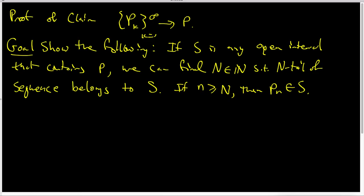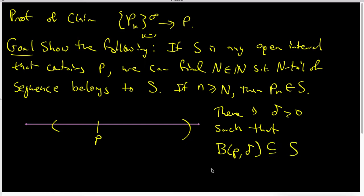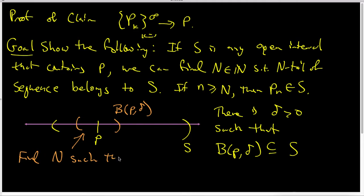We're going to do the standard kind of technique that we do in all of these problems. If this is my number line and here is p, and S is some kind of an open interval, the very first thing I want to say is there is a delta bigger than zero such that the delta ball centered at p is a subset of the open interval S. And instead of just trying to trap things in S, I'm going to trap pn inside this delta ball. So I want to find an N such that pn is a subset of this delta ball.